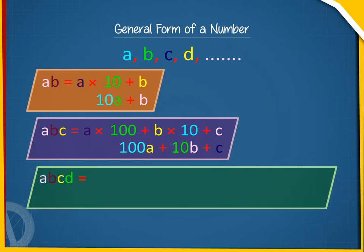ABCD equals A into 1000 plus B into 100 plus C into 10 plus D, or 1000A plus 100B plus 10C plus D.